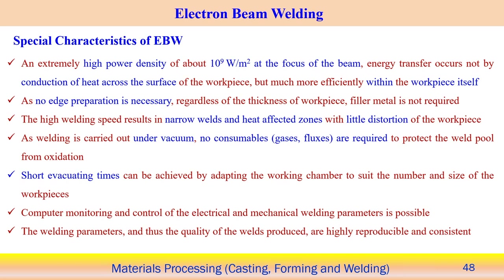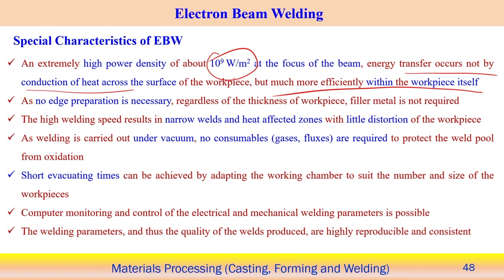Special characteristics of electron beam welding: extremely high power density up to 10⁹ W/m² at the beam focus. Energy transfer occurs not by conduction across the workpiece surface but much more efficiently within the workpiece itself — through keyhole formation. No edge preparation is necessary regardless of workpiece thickness. Filler metal is not required. High welding speed can be achieved, producing narrow welds with small heat affected zone and very little distortion. No consumables are required to protect the weld pool from oxidation under vacuum.